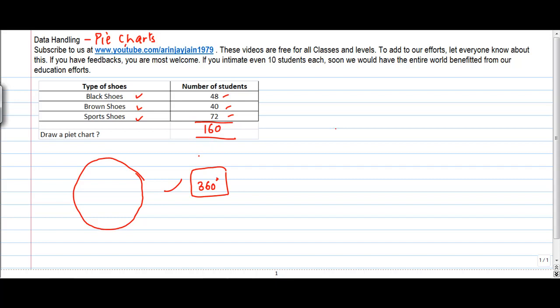Now if you were asked to represent this data in a circle, basically what happens is that you can do that if you know what percentage each of the items constitutes. So suppose you had only black and brown shoes, both 50-50 percent. If you had a circle and you were supposed to represent this data on the circle, what you could have very easily done is you could have divided this circle into two parts.